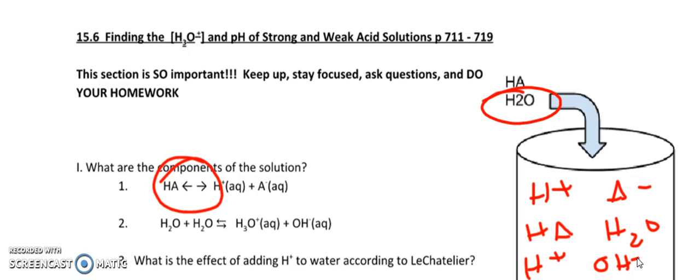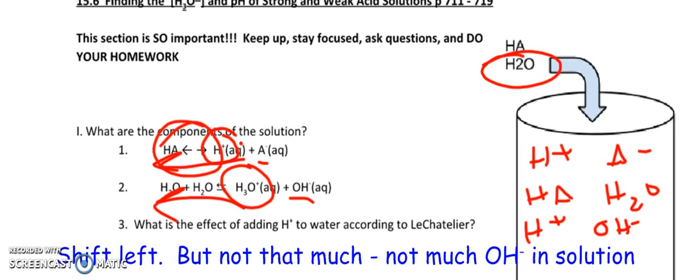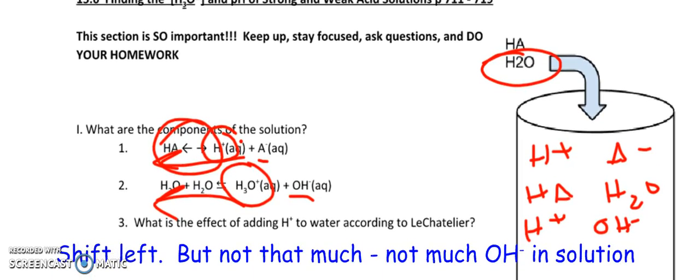So it says, what is the effect of adding more H+ to water according to Le Chatelier? So if I add more H+ into water, what's going to happen? I have H+ here and H+ in a sense here. So if I add more acid into the solution, I'm going to decrease my conjugate bases and I'm going to shift these to the left. So I wrote shift left, but again, not much is going to change as far as the hydroxide. You're not going to do this too much because how much hydroxide was in solution to start with? Not a whole lot.